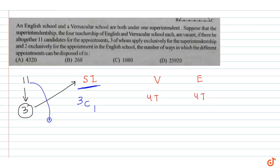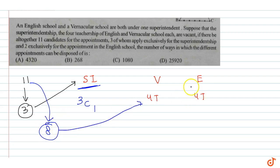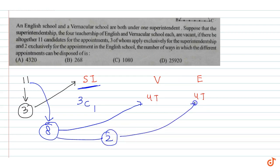How many candidates remain? 11 minus 3 equals 8. So we have 8 remaining candidates.